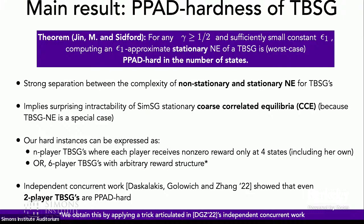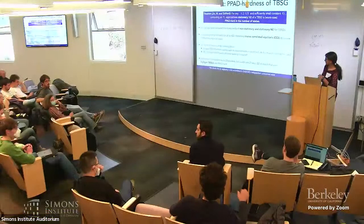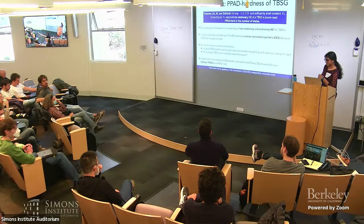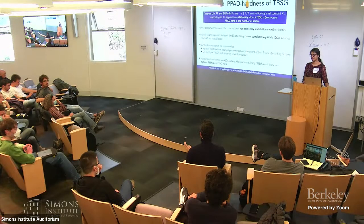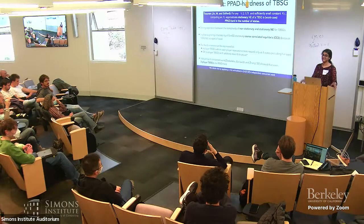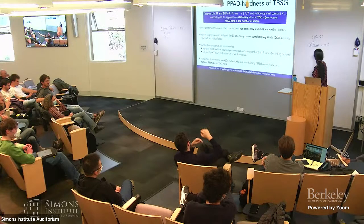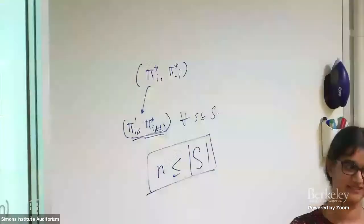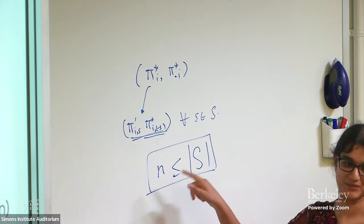Question: Do your results also have a constant number of states? You can actually get a polynomial number of states in your hard instances. In general, the number of players is at most the number of states, but this can sometimes be a lot smaller — it can be two.